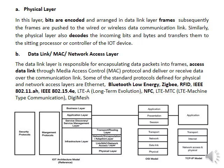In the physical layer, bits are encoded and arranged into data link layer frames, which are then pushed into the wired or wireless data communication link. The physical layer also decodes incoming bits and bytes and transfers them to the sitting processor or controller of the IoT device. The data link MAC/network access layer is responsible for encapsulating data packets into frames, managing access to the data link through MAC protocol, and delivering or receiving data over the communication link.